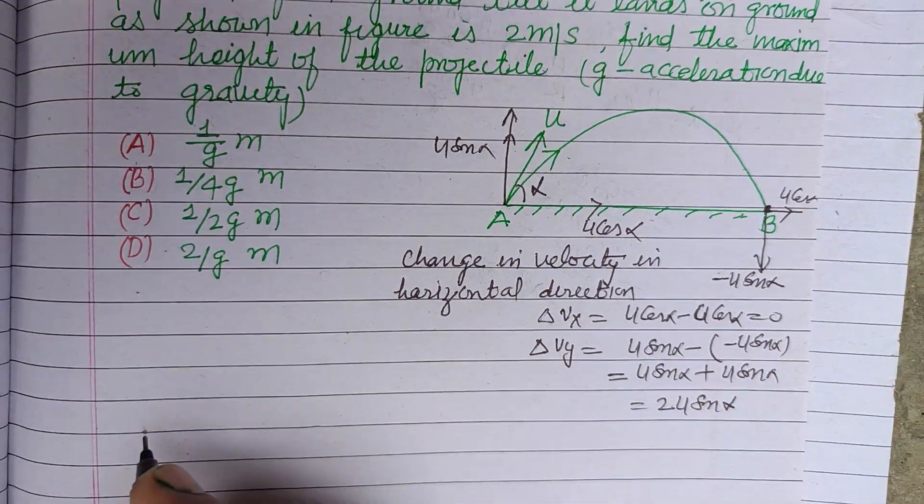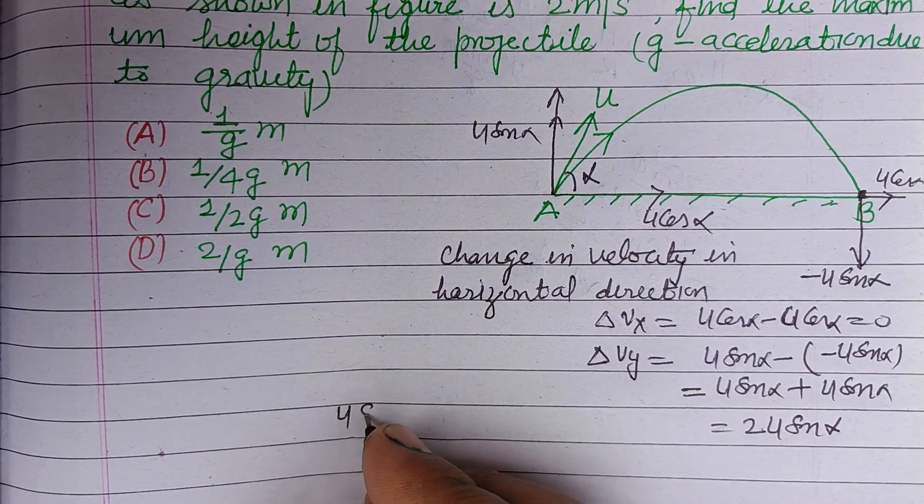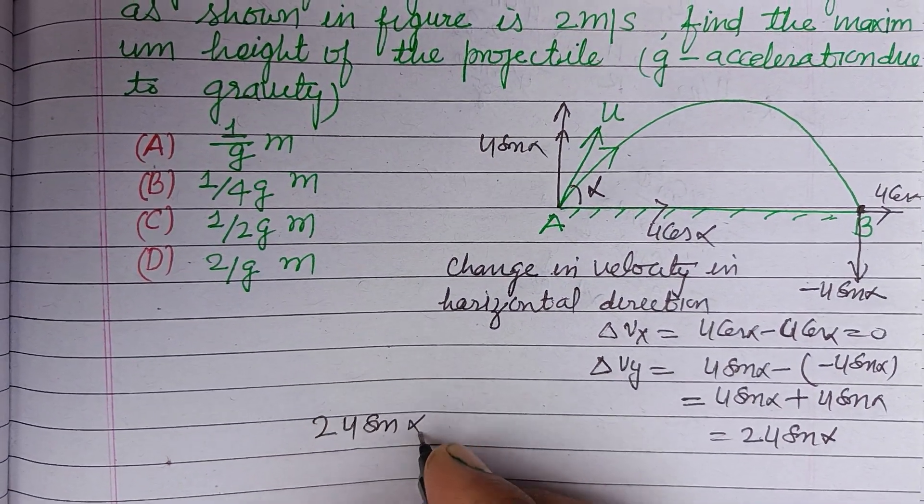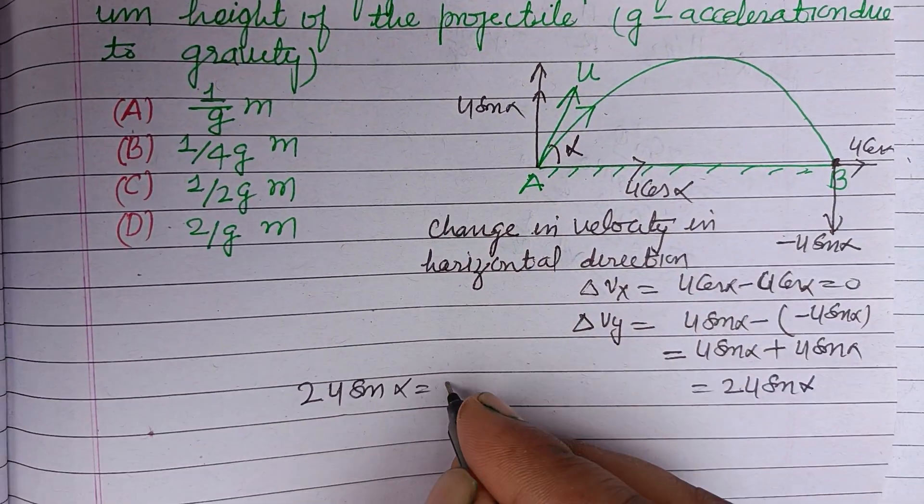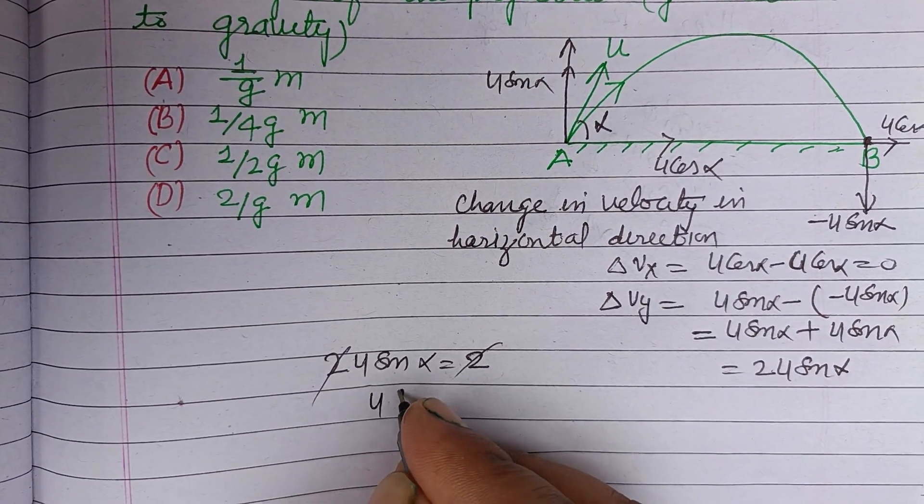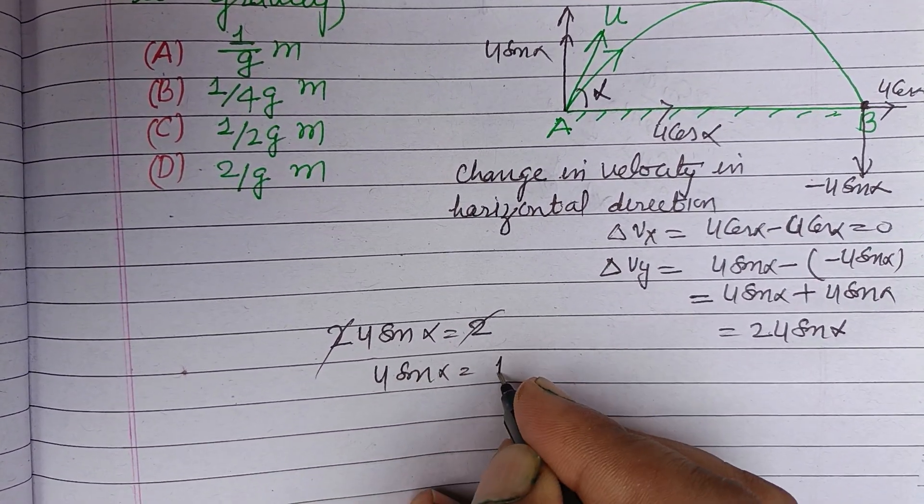This is given to us as 2, so 2u sine alpha equals 2. Canceling the 2, u sine alpha equals 1.